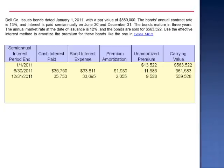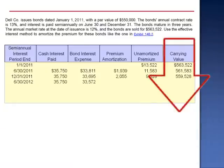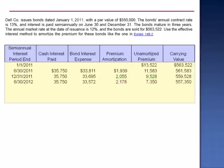This reduces the carrying value to $559,528. June 30, 2012: the cash interest paid is a constant dollar amount, $35,750, and bond interest expense is a constant rate — 6% of $559,528 is $33,572. Notice that as the carrying value is dropping, so is the dollar amount of bond interest expense. The premium amortization is $2,178, which drops the unamortized premium to $7,350 and the carrying value to $557,350.